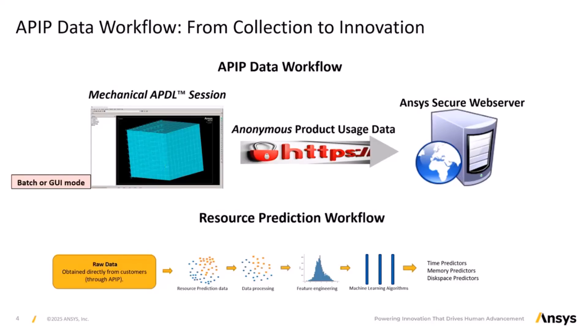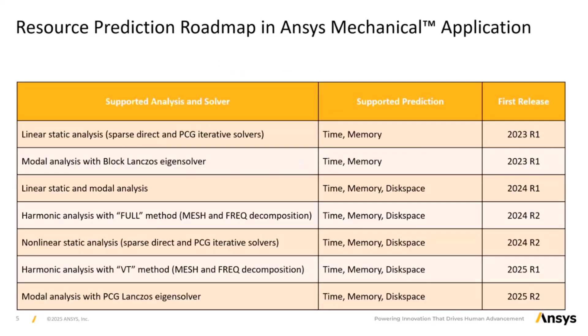The resource prediction feature has significantly evolved over the past few releases, honing the ability to estimate computational resources for various analyses. Release 2023 R1 introduced the resource prediction tool supporting time and memory predictions for static analysis using both the sparse direct and preconditioned conjugate gradient PCG solvers. In the same release, support extended to modal analysis using the Block Lanczos eigensolver. Then 2024 R1 included disk space prediction capabilities for linear static and modal analysis, providing comprehensive resource estimates.